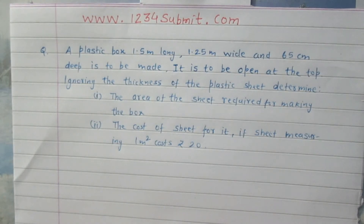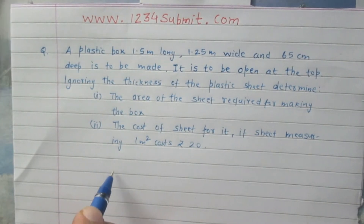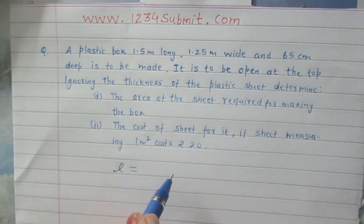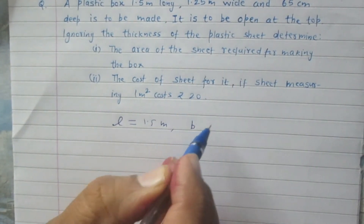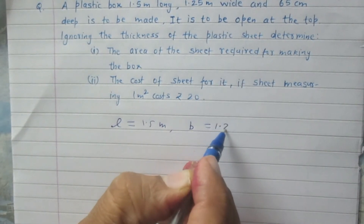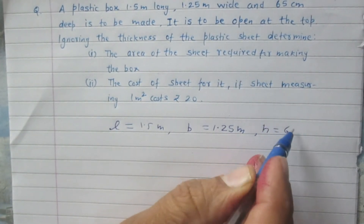We are given a plastic box and we are supposed to ignore its thickness. The length, breadth and the height of this box are not equal, so we can say that this plastic box is a cuboid. Let us assume that length of the plastic box is L which is 1.5m, B stands for the breadth which is 1.25m.